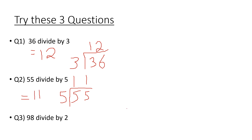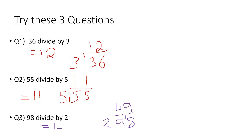For 98 divided by 2: let's verify using the bus stop method. 2s into 9 go 4 times with 1 remainder, then 2s into 18 go 9 times. So the answer is 49.